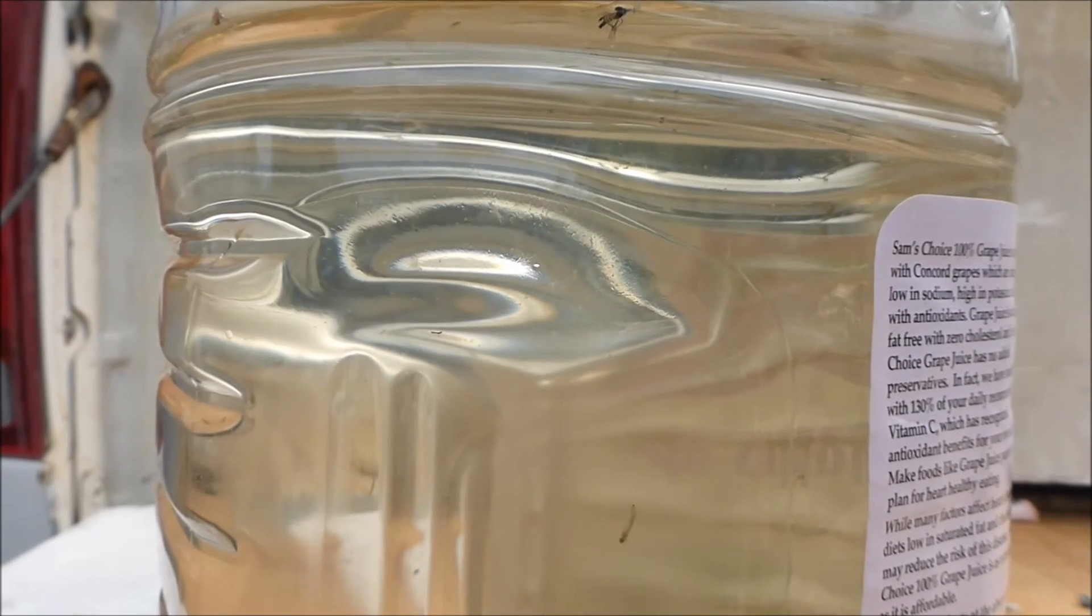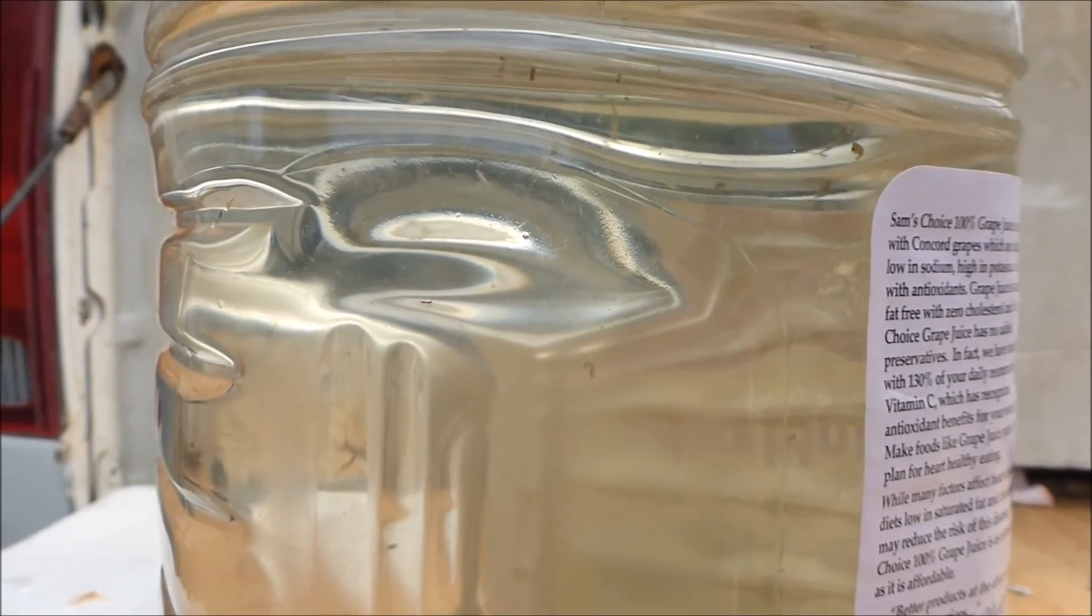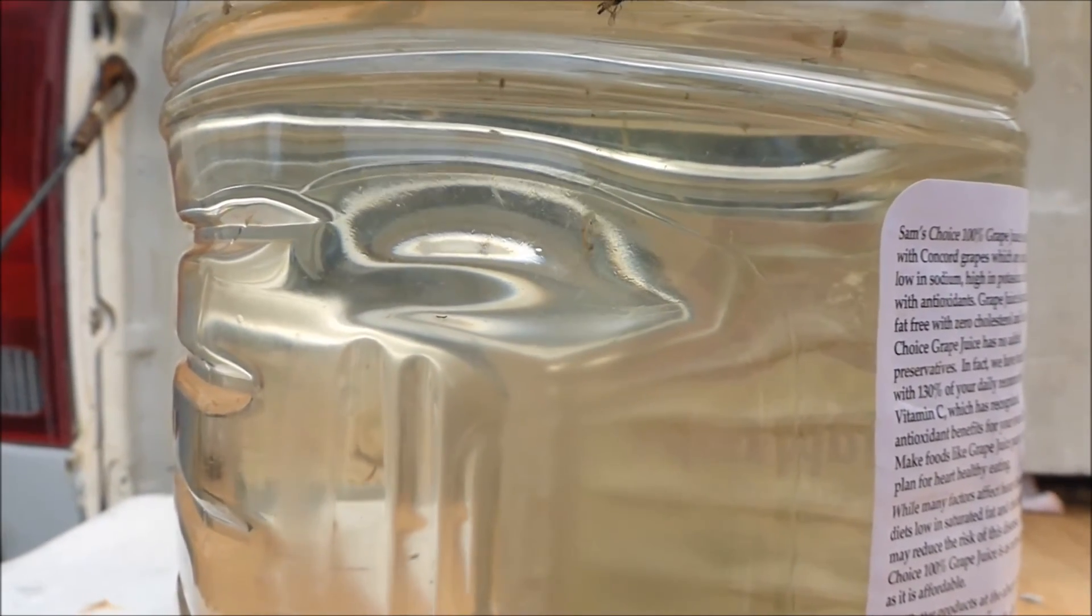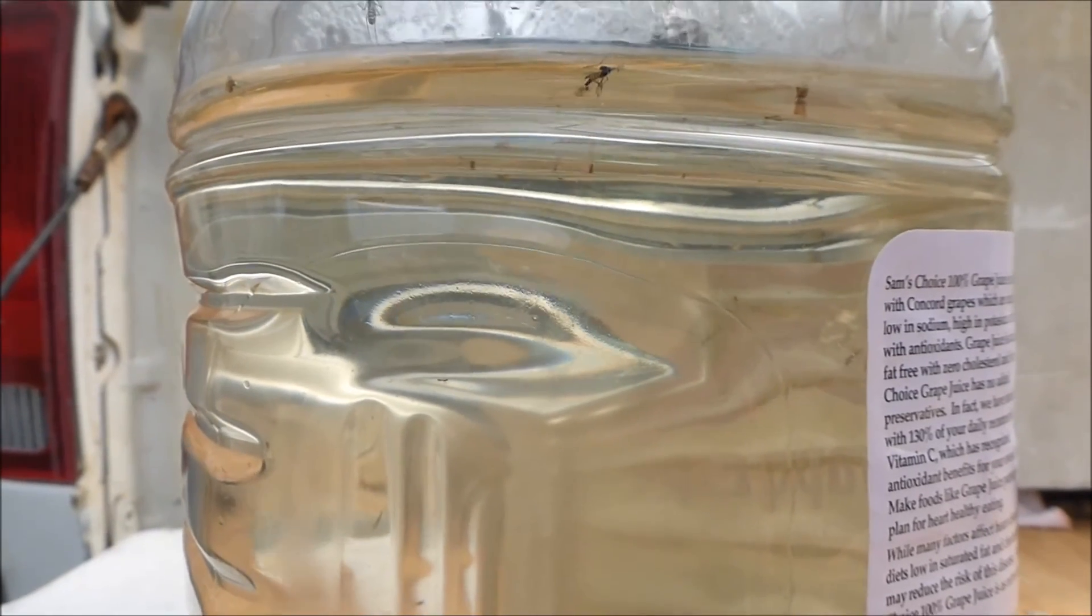Sitting water can become a breeding ground for mosquitoes, so if you see mosquito wigglers in the water, then clean out the drinking dish.